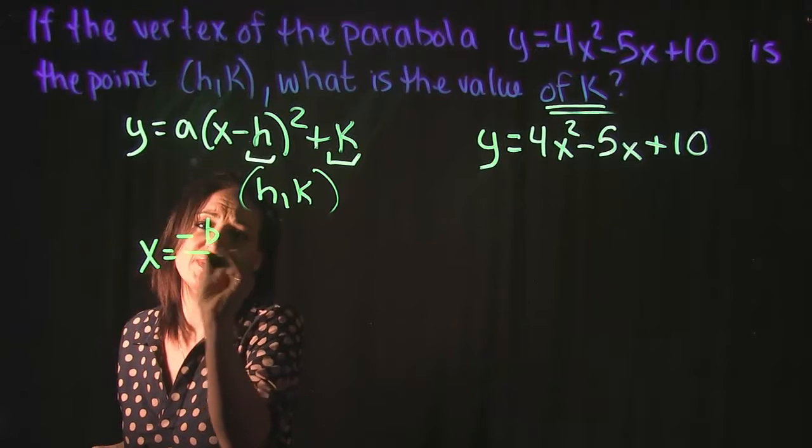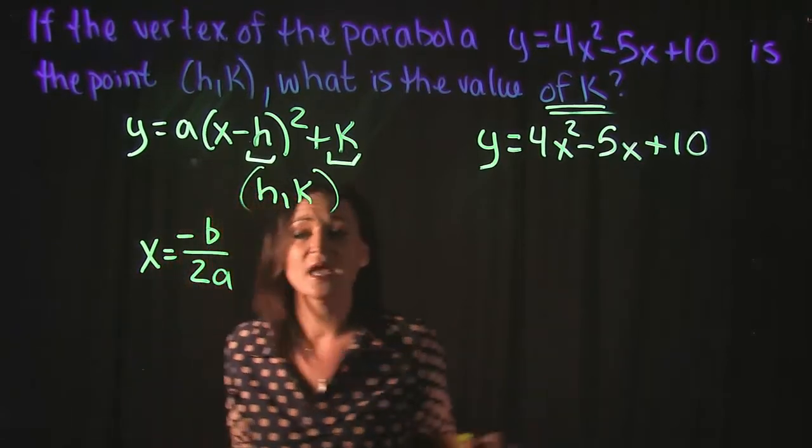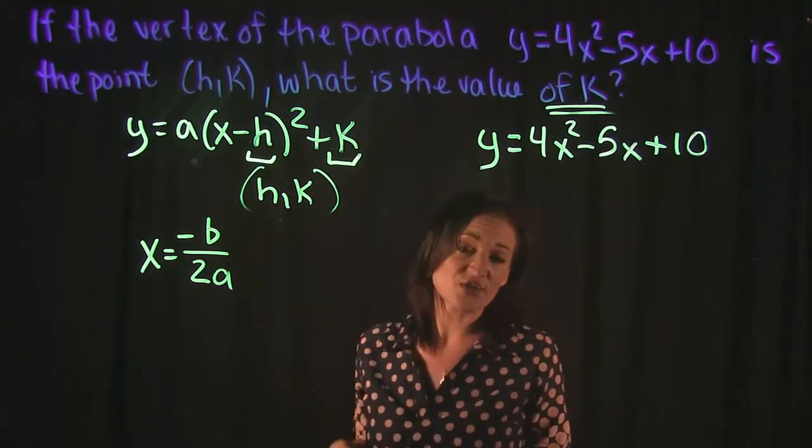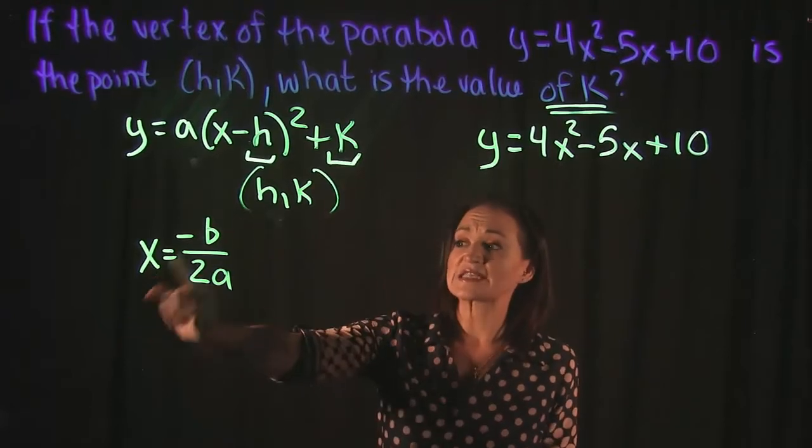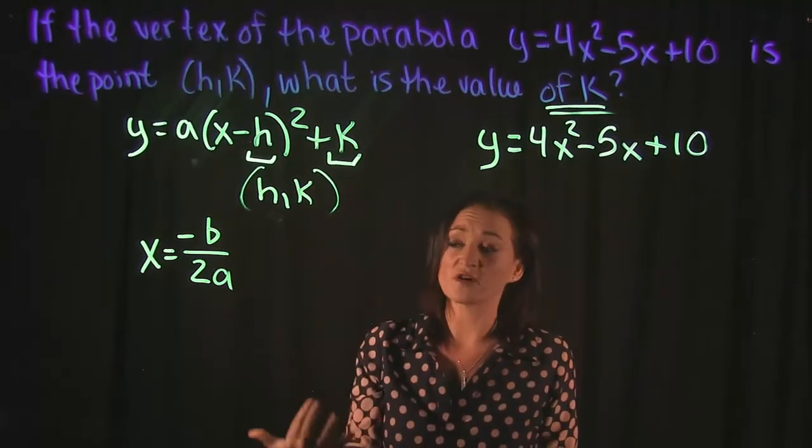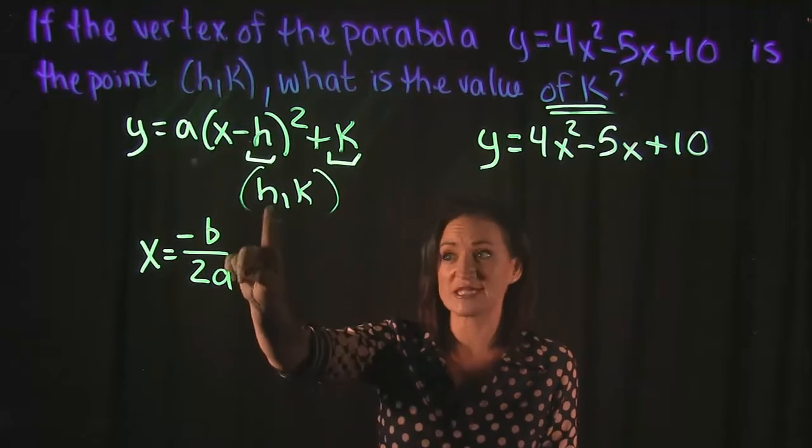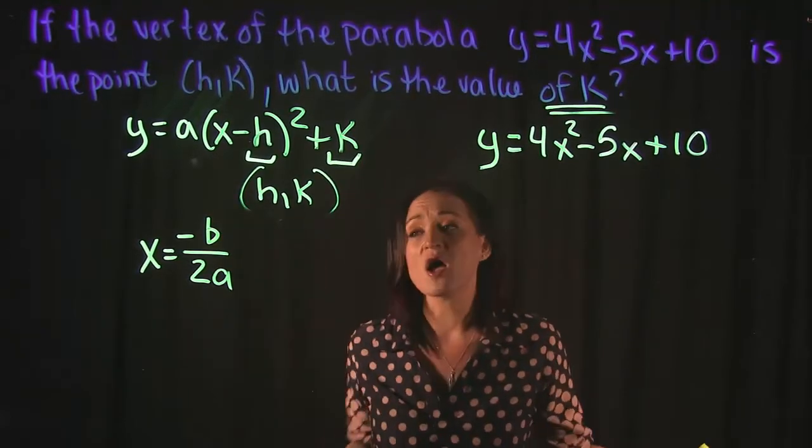If we plug into this formula, we will get the x-value for our vertex, so essentially this is going to give us h. And as long as we know what h is, we can then find k.